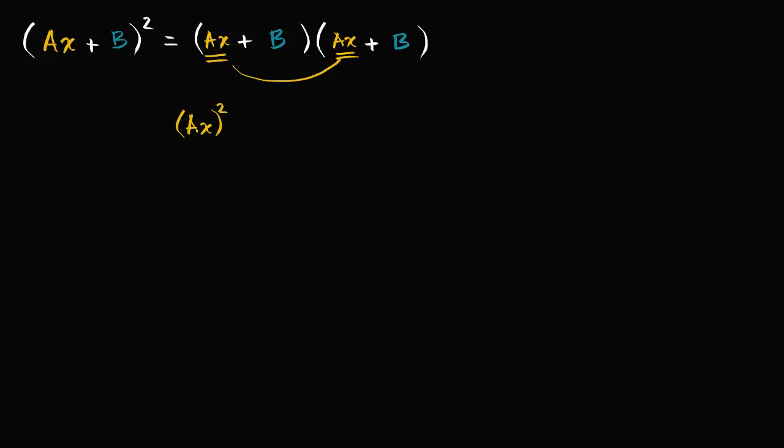And then if you take this Ax and multiply it times this B, you're going to get ABx. Then if you take this B and multiply it times this Ax, you're going to get another ABx. And then last but not least, if you take this B and multiply it times the other B, it's going to be plus B squared.